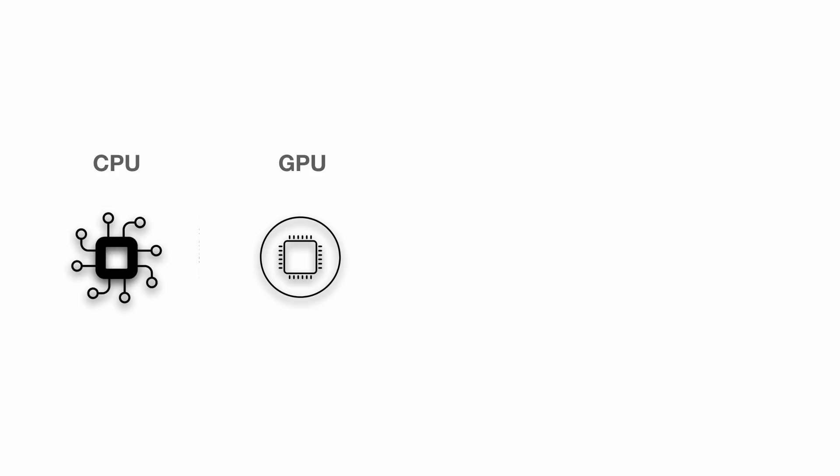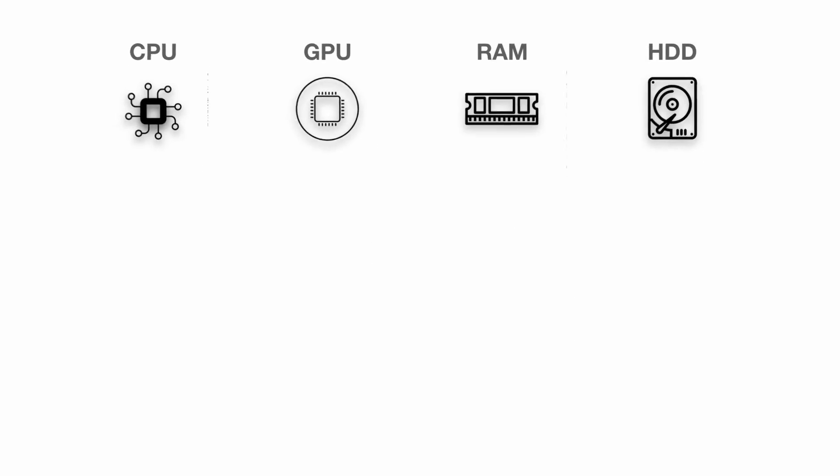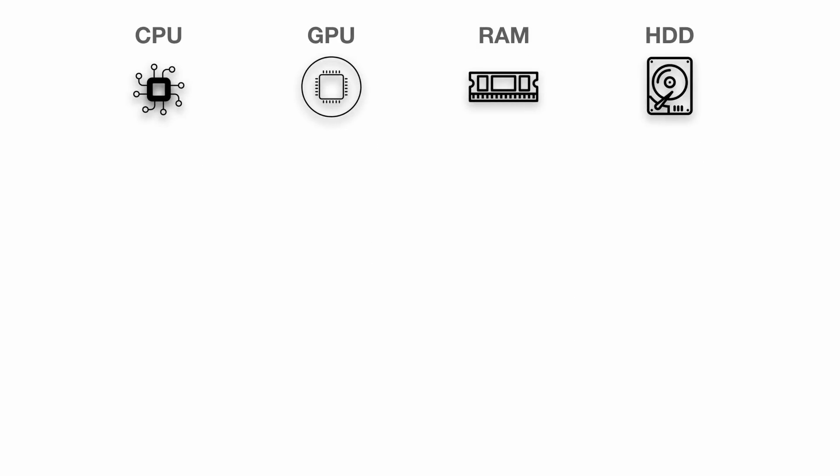So let's start with a very simple presentation that should first explain the basics. If we take a look at a computer, there are four main things in every system that are important: the CPU or Central Processing Unit, the GPU or Graphics Processing Unit, the RAM or Random Access Memory, and the HDD or your storage. So let's take a look at each one of these components.